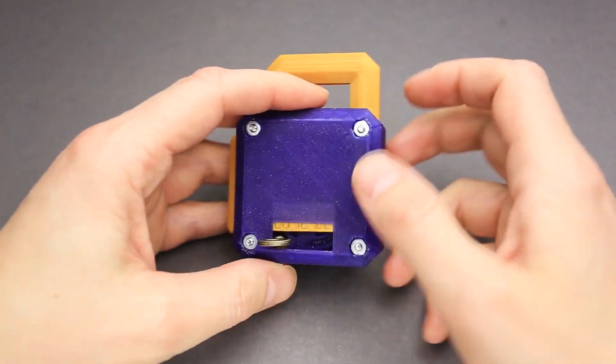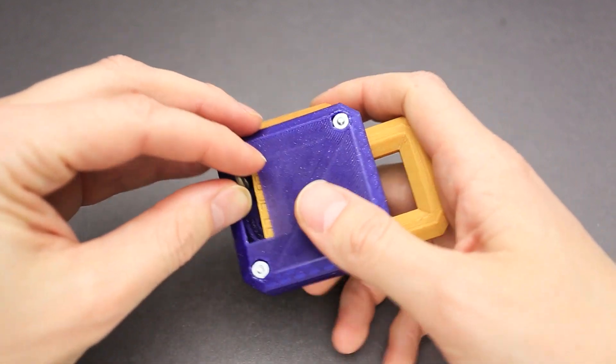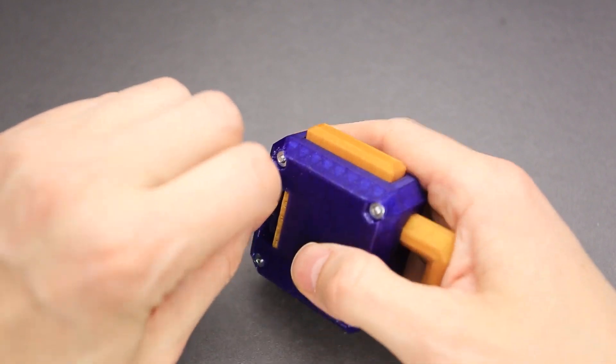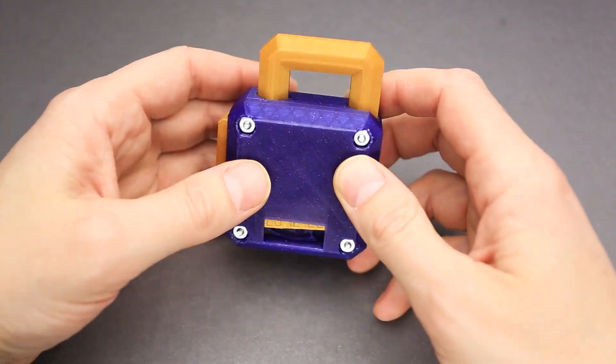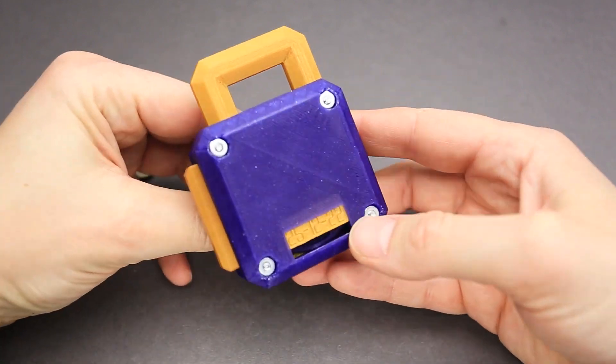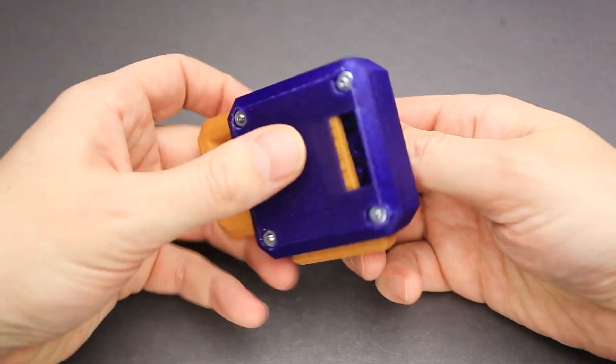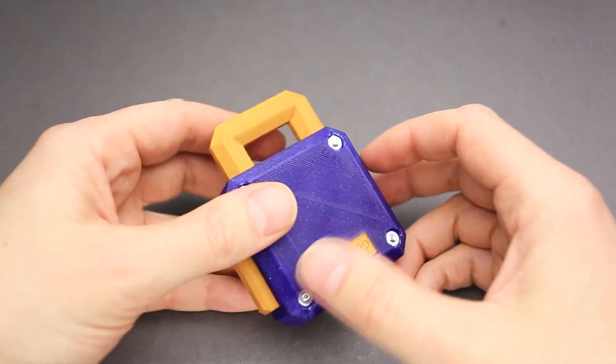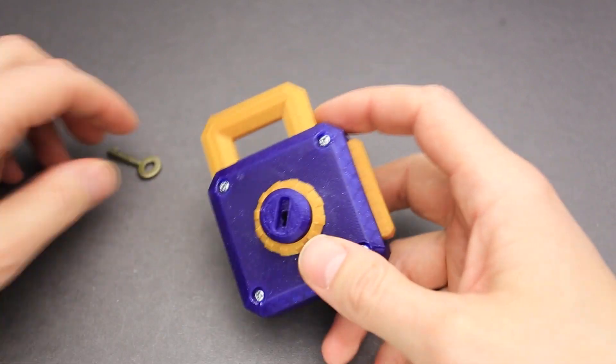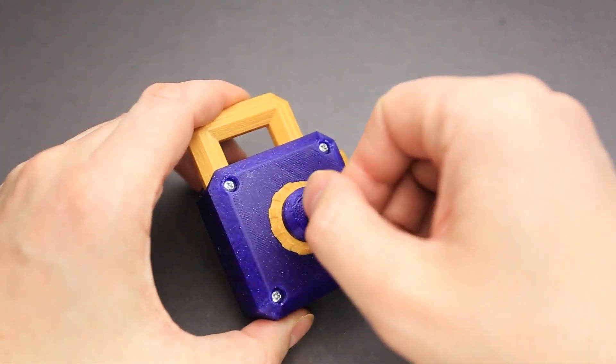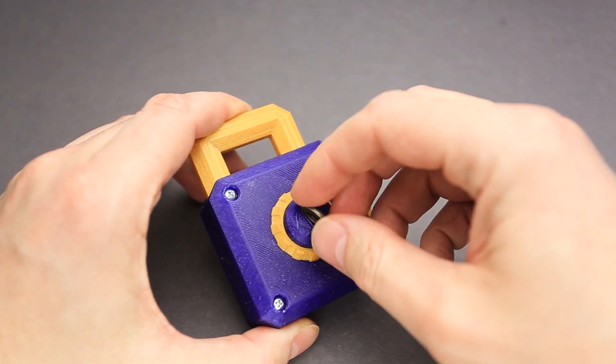But the puzzle is solved only when it is solved both ways. So I guess I have to put everything back. Solving it backwards was much easier since I already knew some of the steps. And now I just have to put the key in.